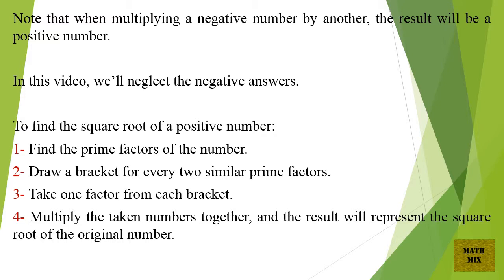To find the square root of a positive number: 1. Find the prime factors of the number. 2. Draw a bracket for every two similar prime factors. 3. Take one factor from each bracket. 4. Multiply the taken numbers together, and the result will represent the square root of the original number.